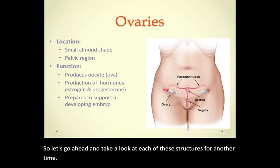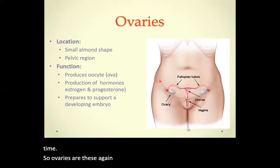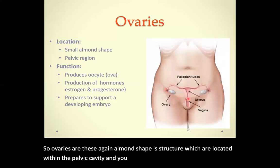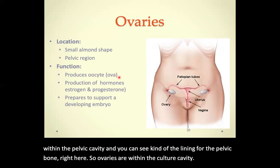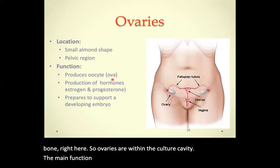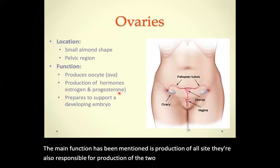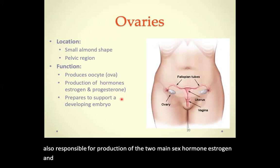The ovaries are almond-shaped structures located within the pelvic cavity, as you can see from the lining of the pelvic bone here. Their main function is production of oocytes. They are also responsible for production of the two main sex hormones, estrogen and progesterone, and by releasing these hormones they support a possible developing embryo if fertilization has occurred.